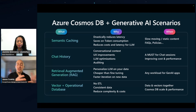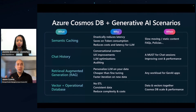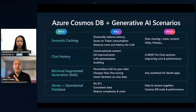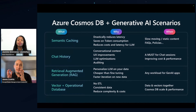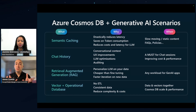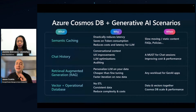Now, combining vector search and chat history together, you have the concept of semantic caching. Instead of every time there's a new user prompt you have to ping your large language model API, if I'm caching those LLM responses in my database, I can refer to those using a vector search. This saves me from having to make a call to my large language model API. If I've seen this question from a user before, I can simply execute a vector search on the database and retrieve a large language model response I've seen previously. This can drastically reduce the cost of generative AI applications and saves latency as well.